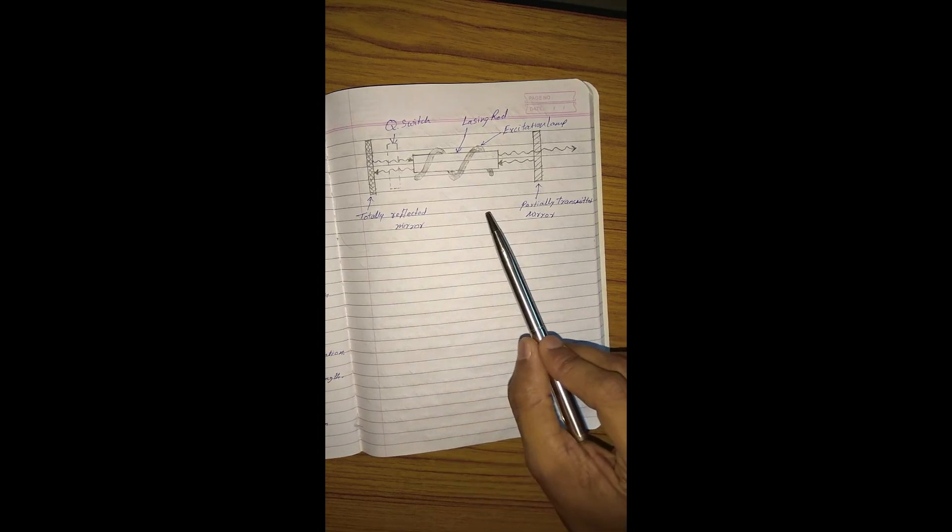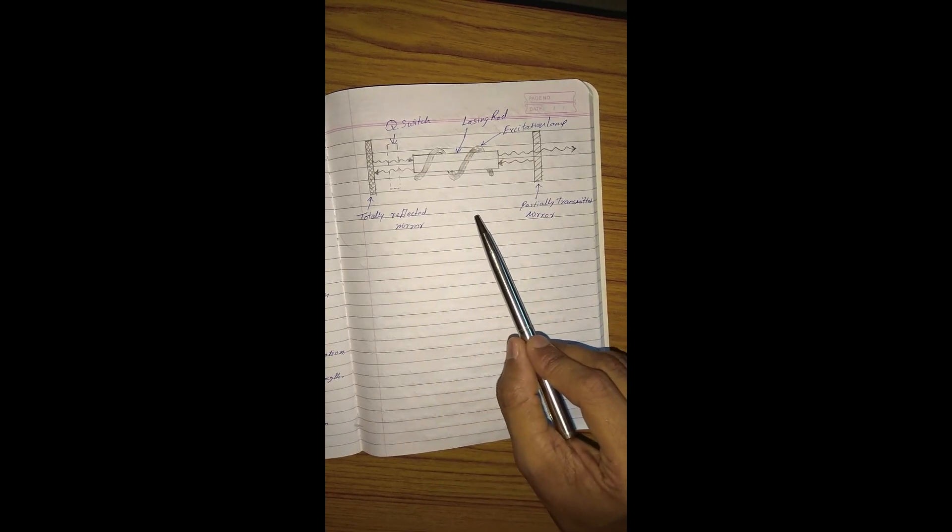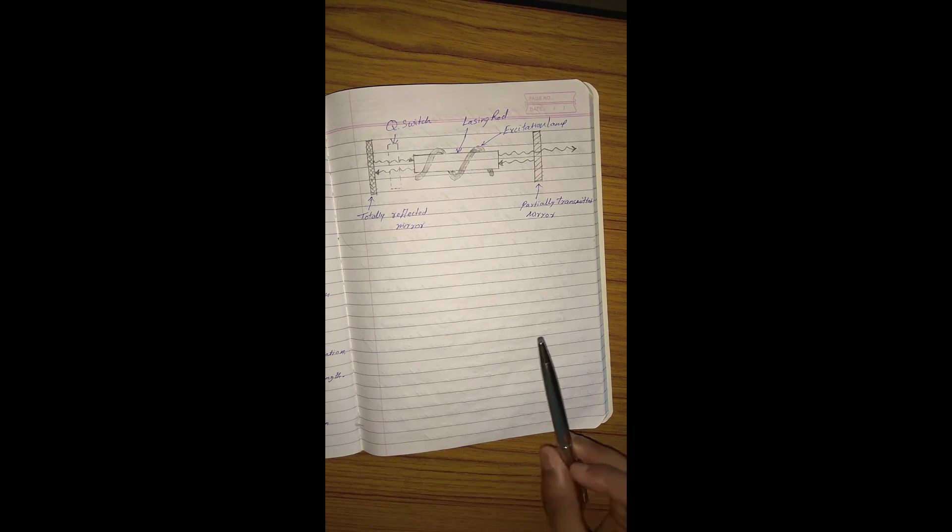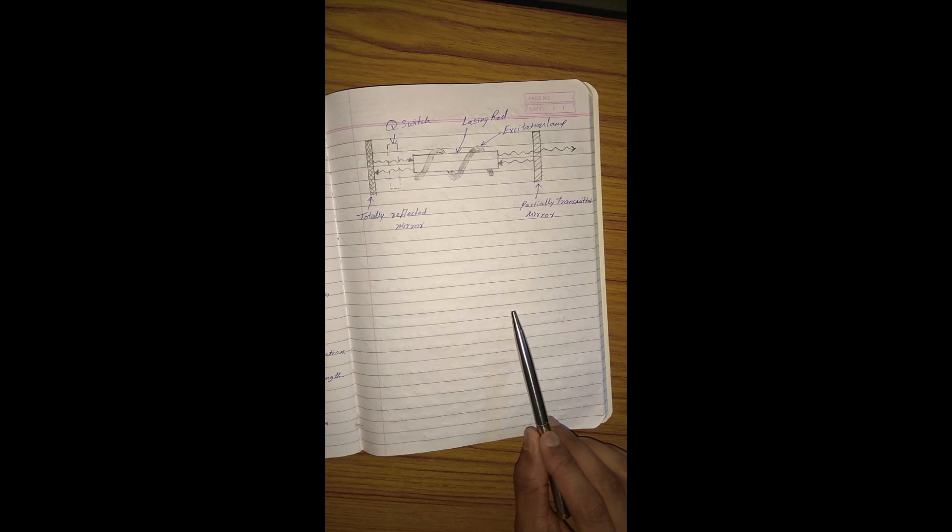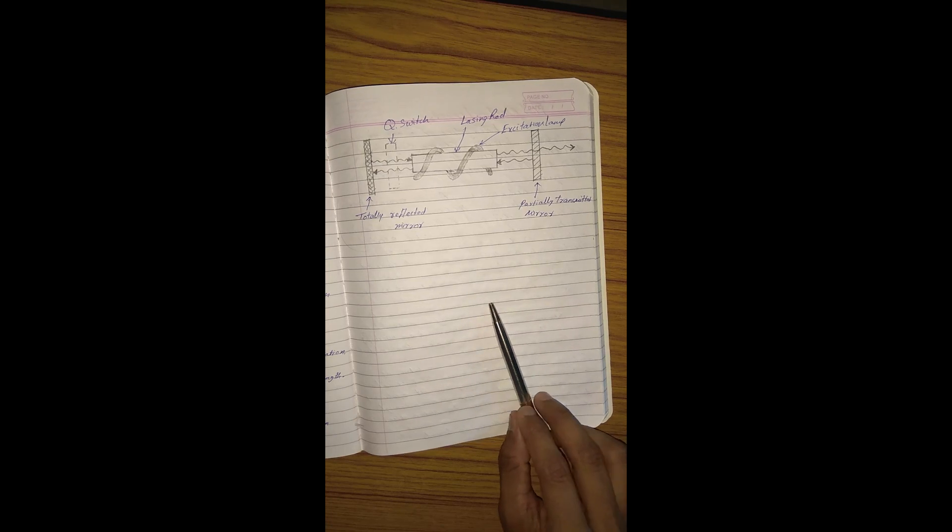The frequency doubling process is also used to generate laser with suitable wavelength. Generally, potassium dihydrogen phosphate is used to generate 694 nanometer to 347 nanometer wavelength, and neodymium glass laser is used to generate 265 nanometer wavelength. Thank you.